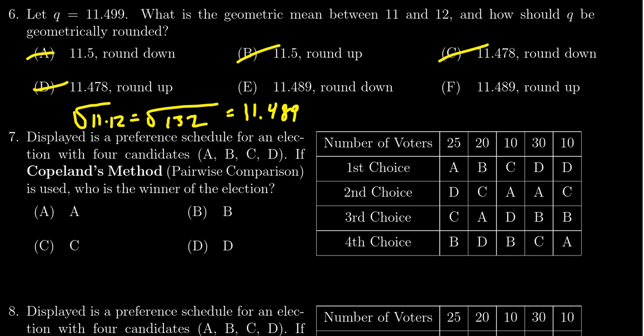So then when it comes to rounding, if our quota is larger than the geometric mean we round up. If our quota is smaller than the geometric mean we round it down. 11.499, which was in the danger zone, is bigger than 11.489, so the correct answer would be F—we would round this number up using geometric rounding.